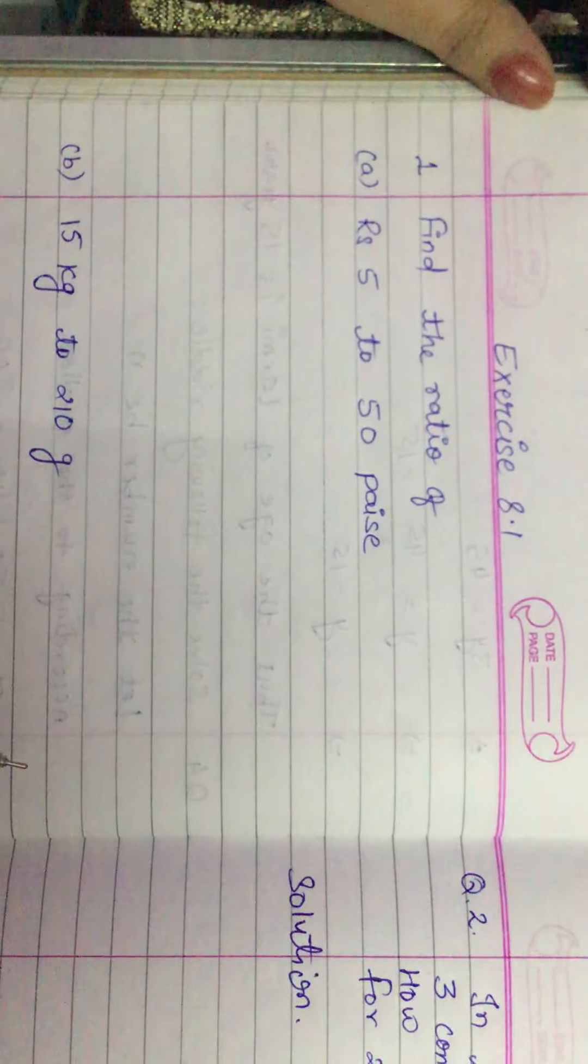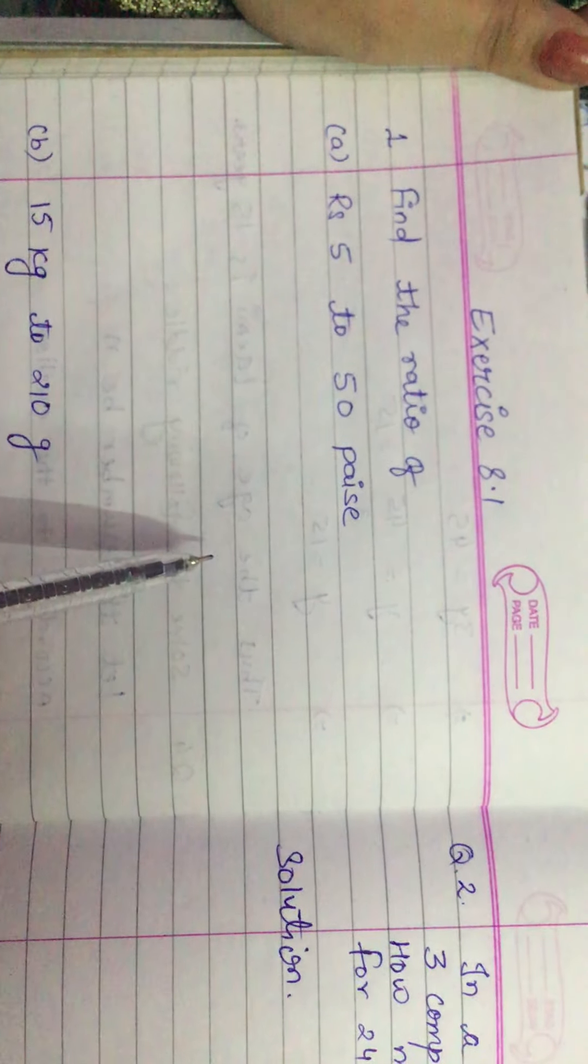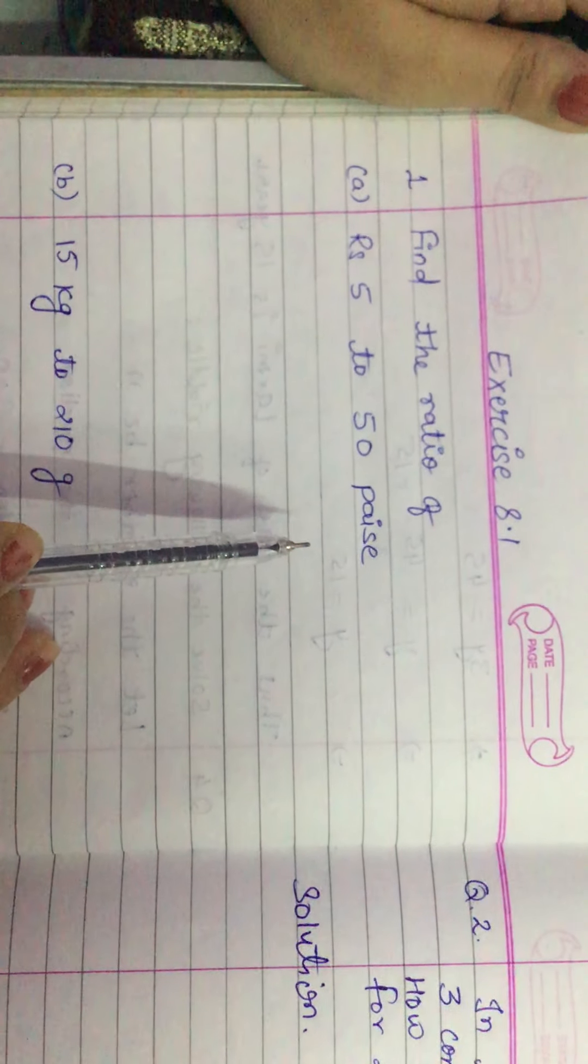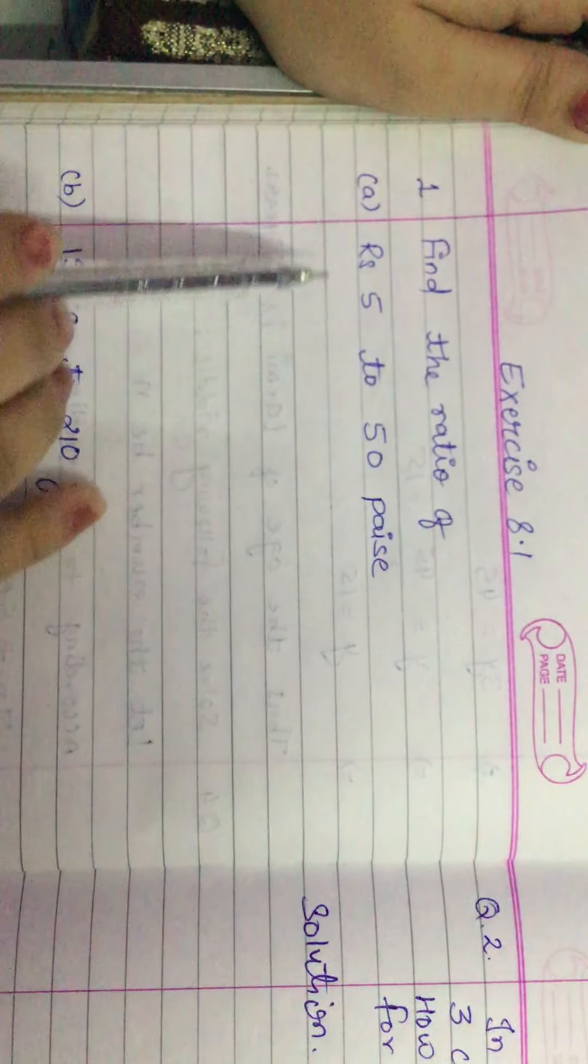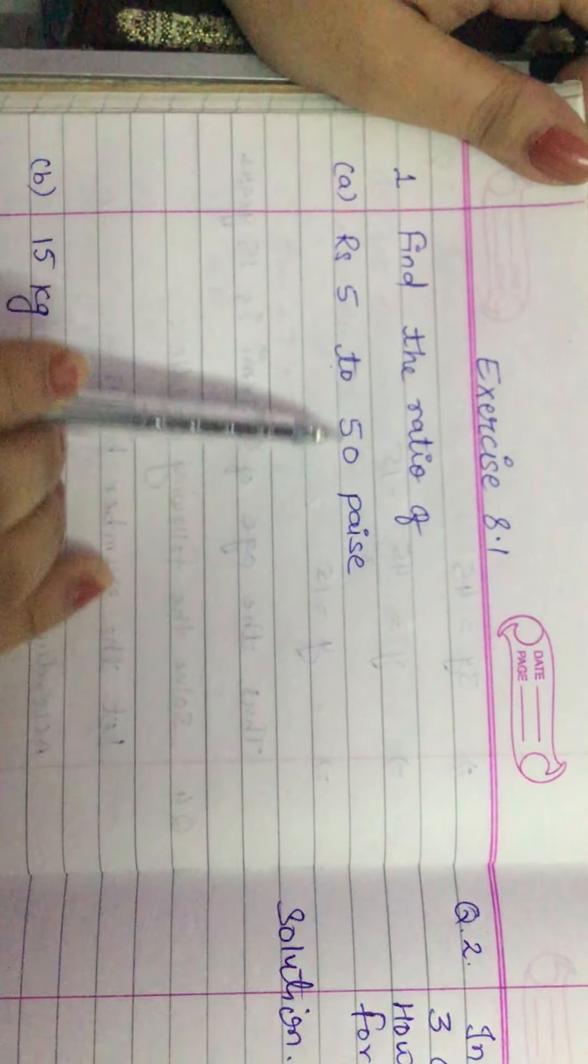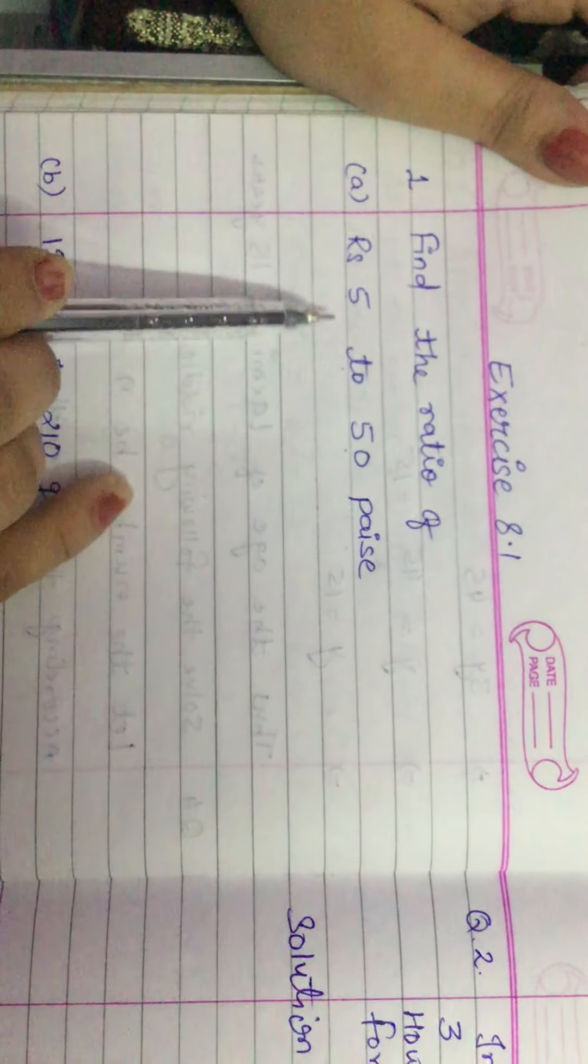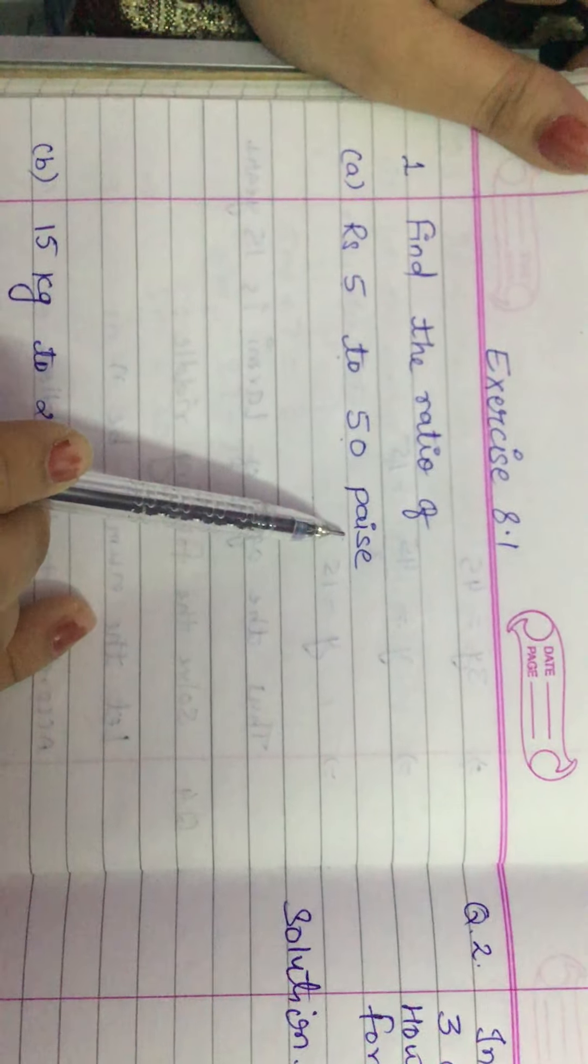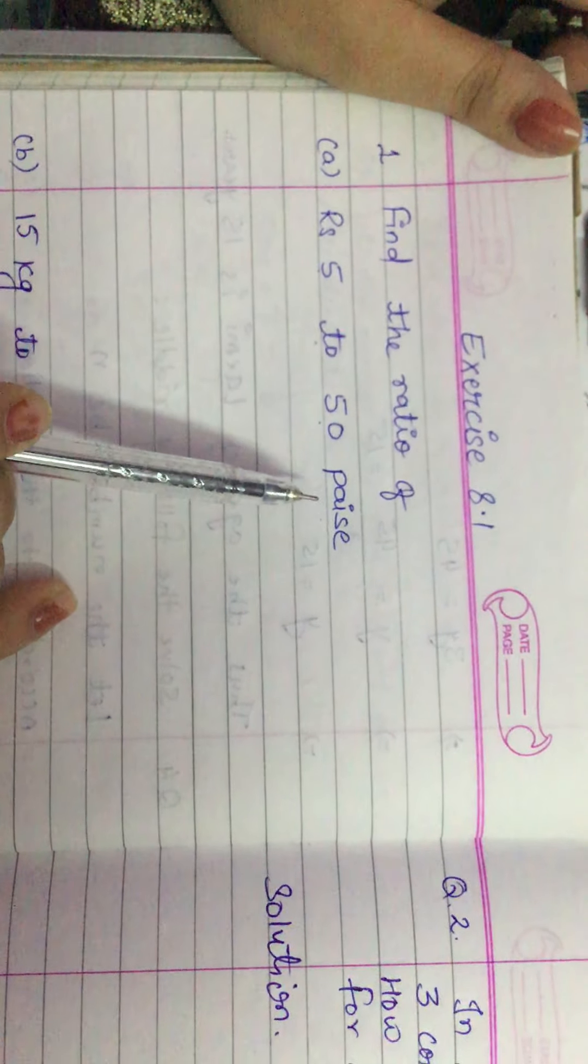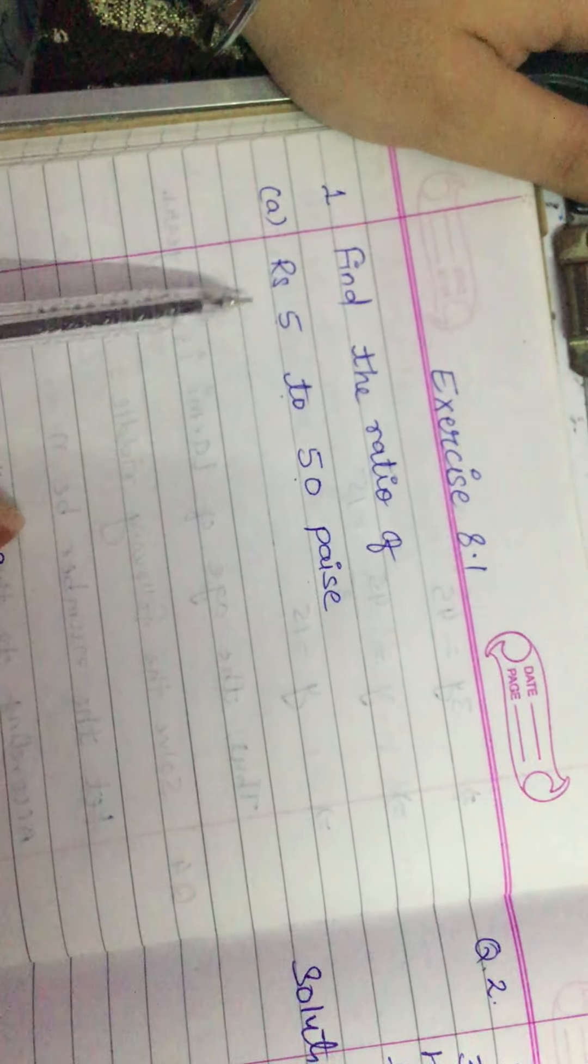First we have to check that when we have to find the ratio of two quantities, the unit should be same. In this question we can see rupees 5 to 50 paisa - one quantity in rupees and one quantity in paisa. So first we have to convert to the same unit. Here we will convert rupees 5 to paisa.